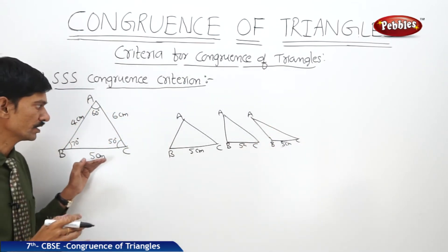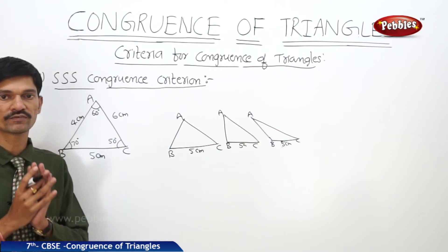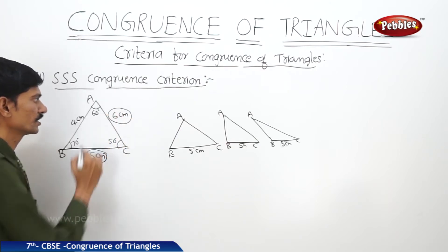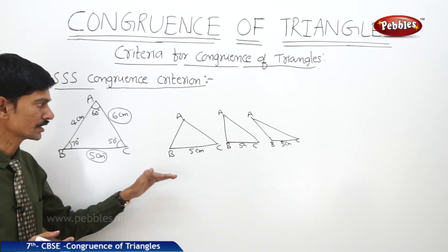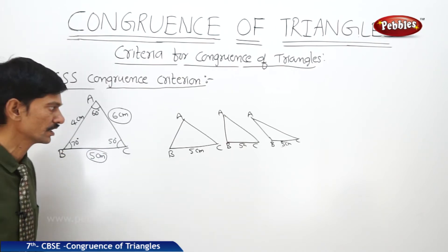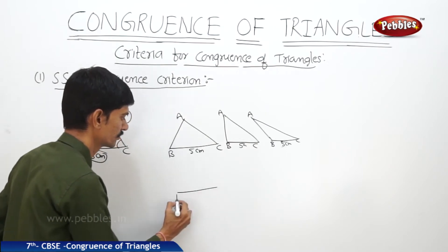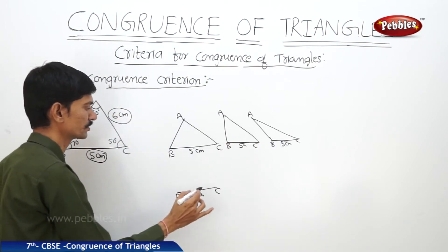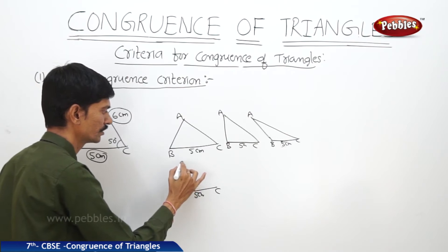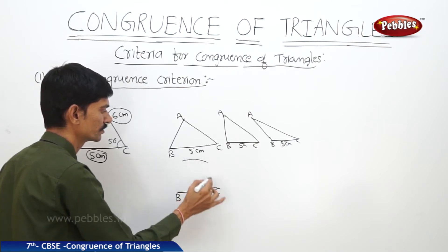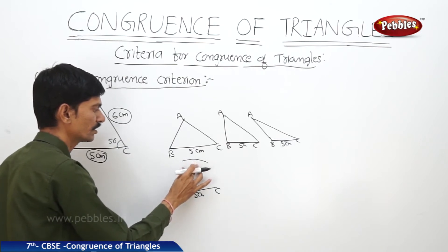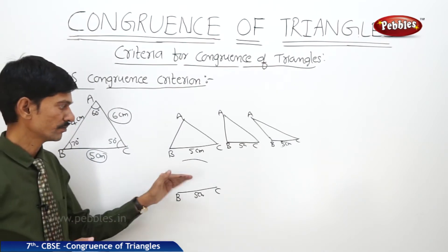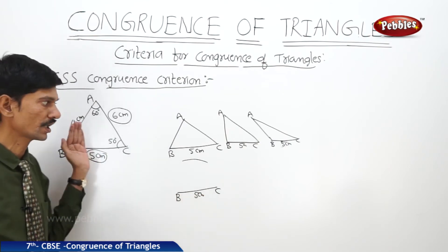Now if I give you two sides — BC as 5 centimeters and AC as 6 centimeters — can you draw the exact copy? With C as center and 6 centimeters radius, you draw an arc, but how can you find point A on this arc? So we are still not able to draw the exact copy of the original triangle ABC with just two sides.